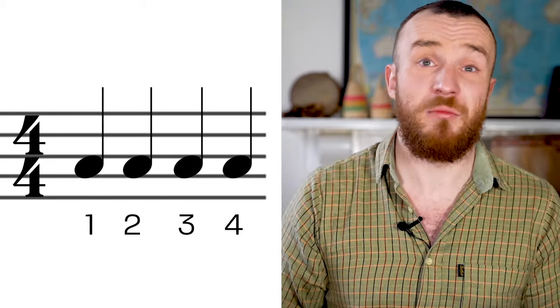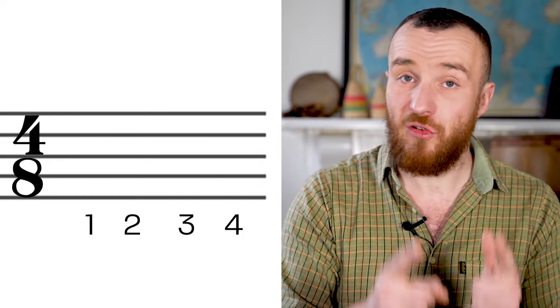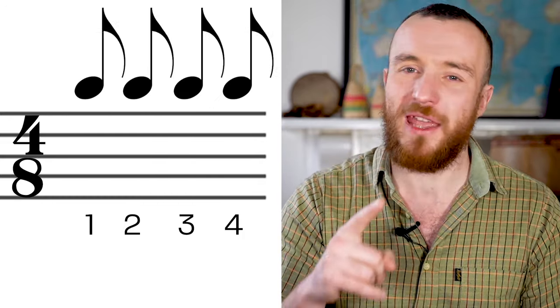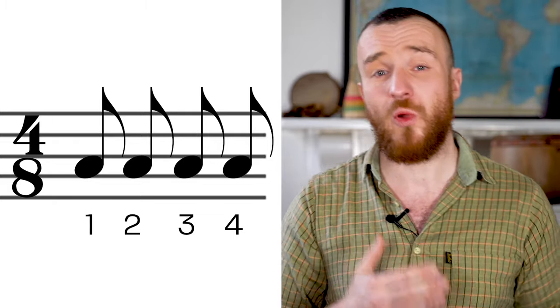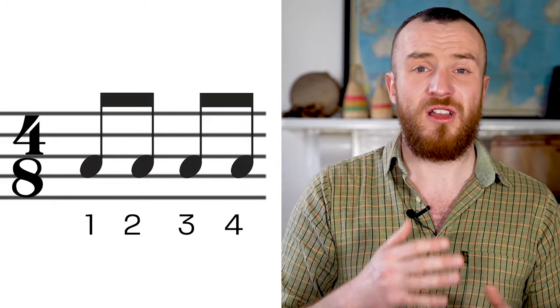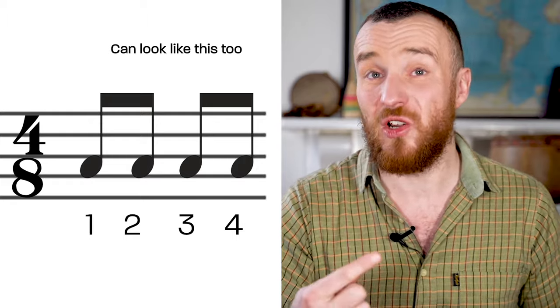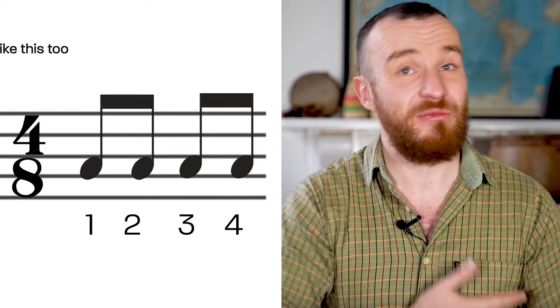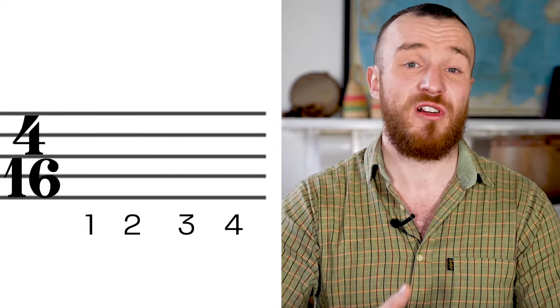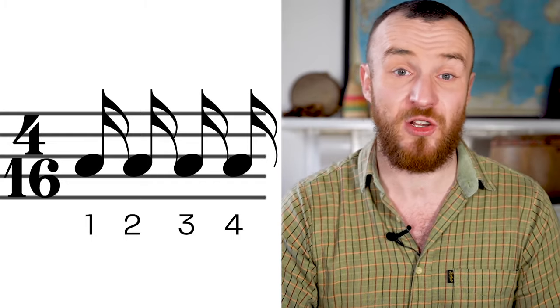If we change the bottom number to an eight, we still have four beats in a bar, but each beat has a quaver value. So it will be four quavers per bar, four quavers or four eighth notes per bar.